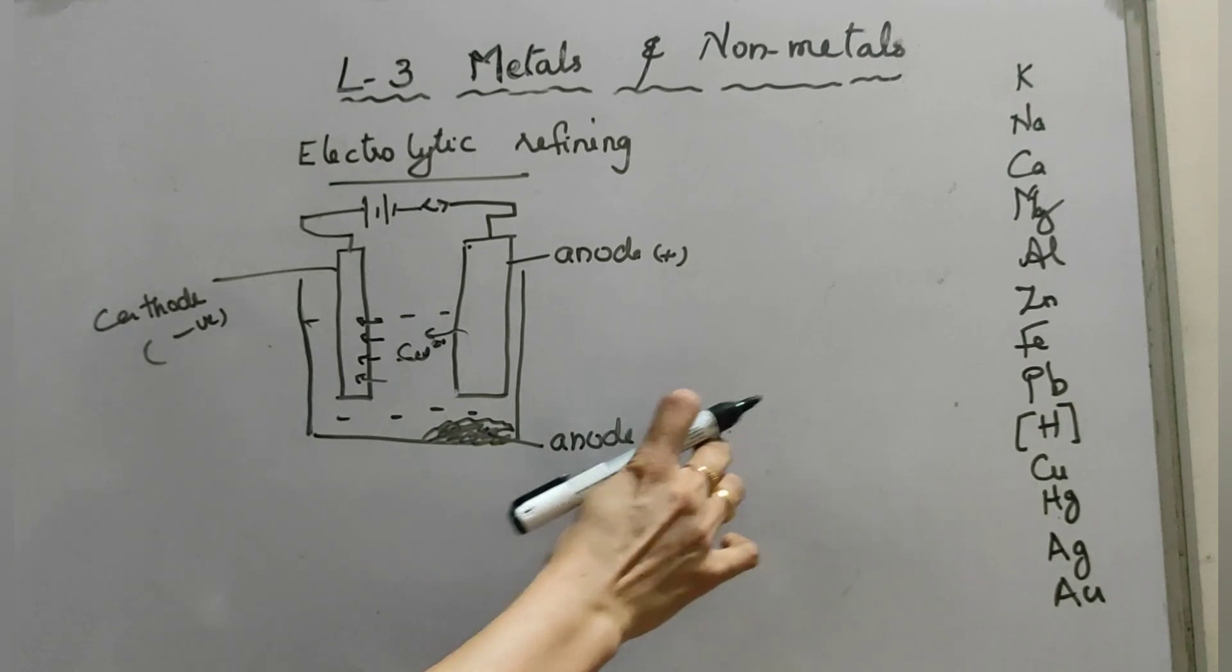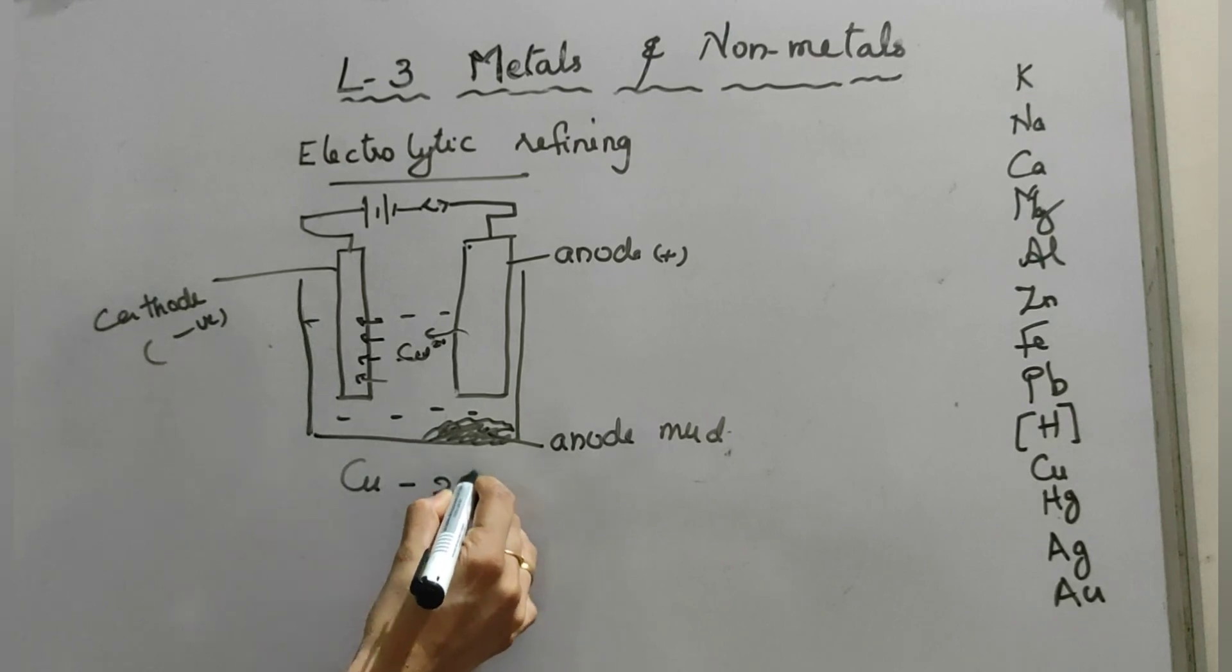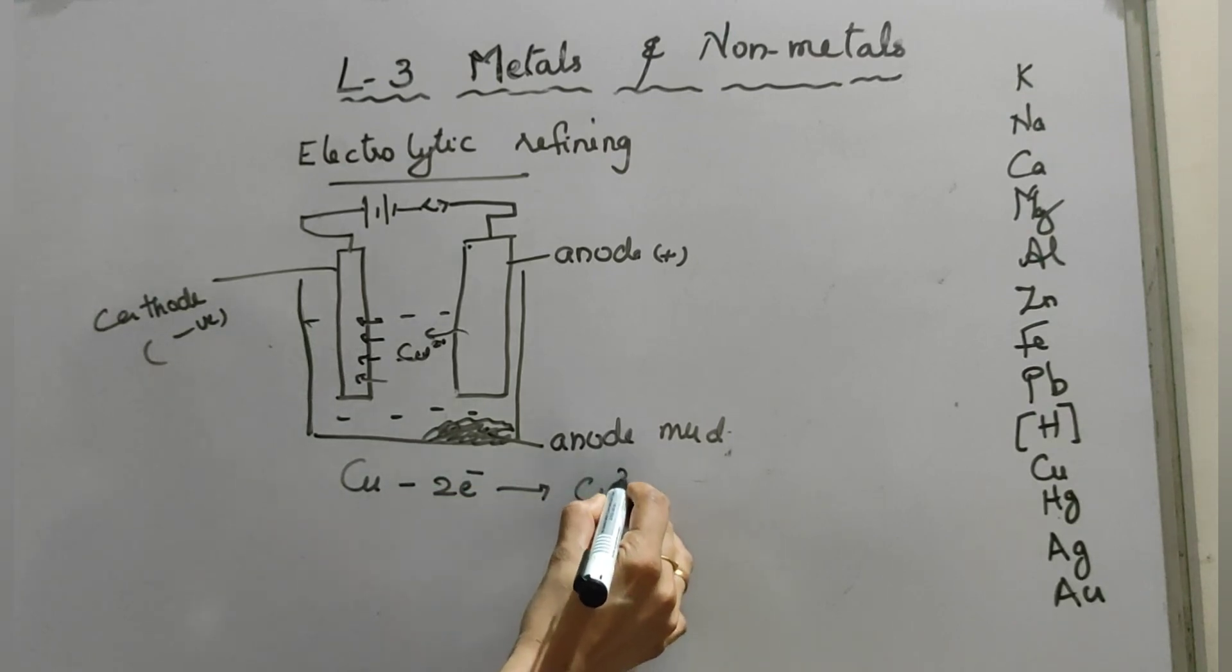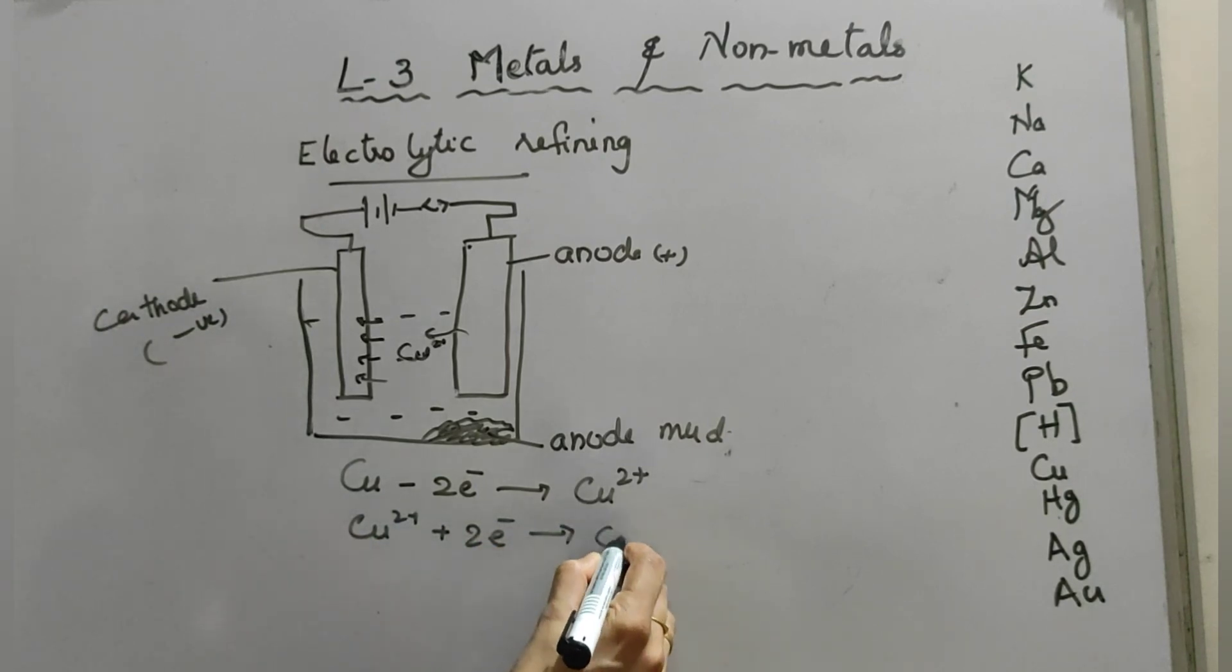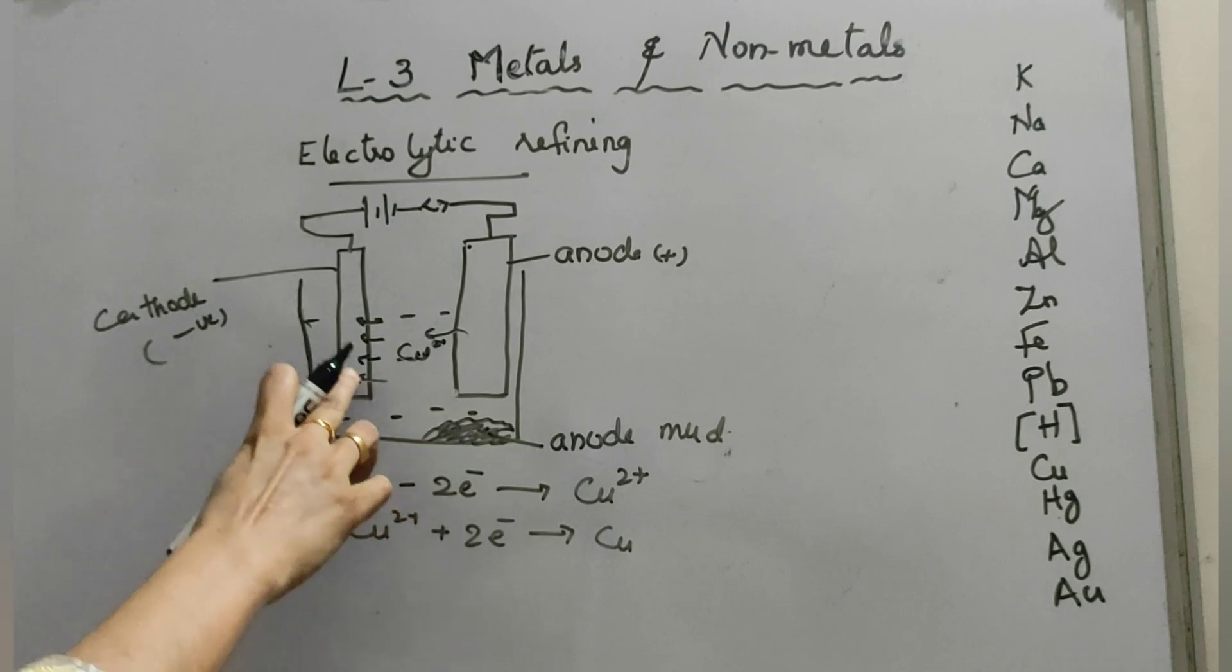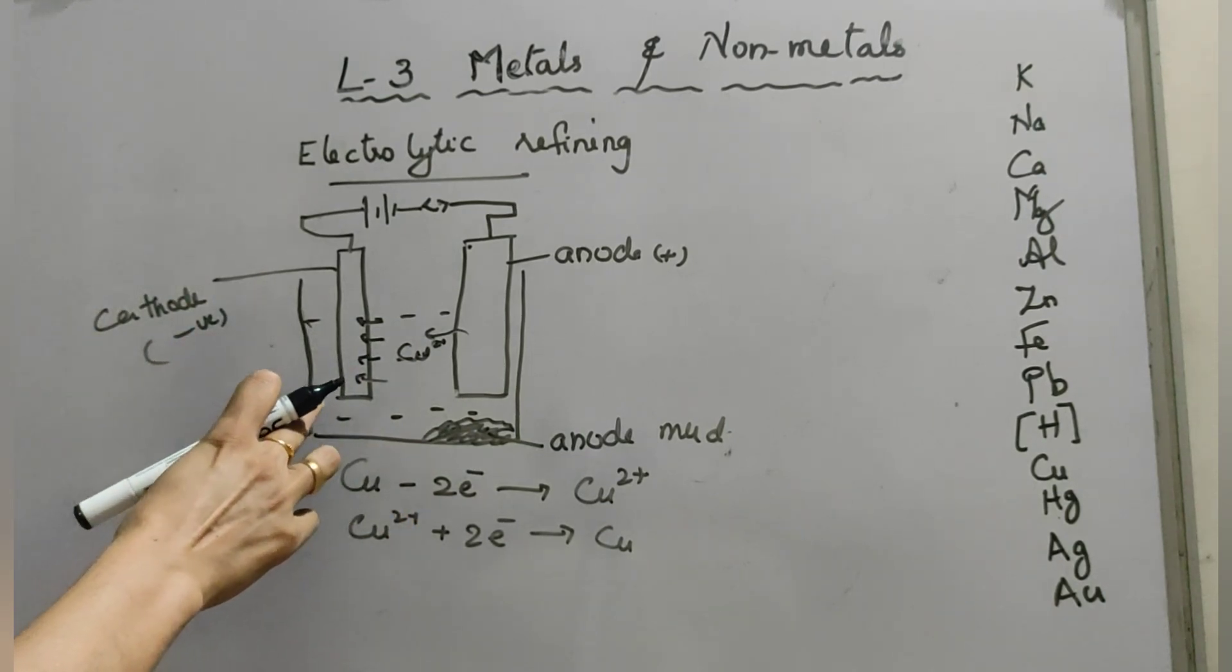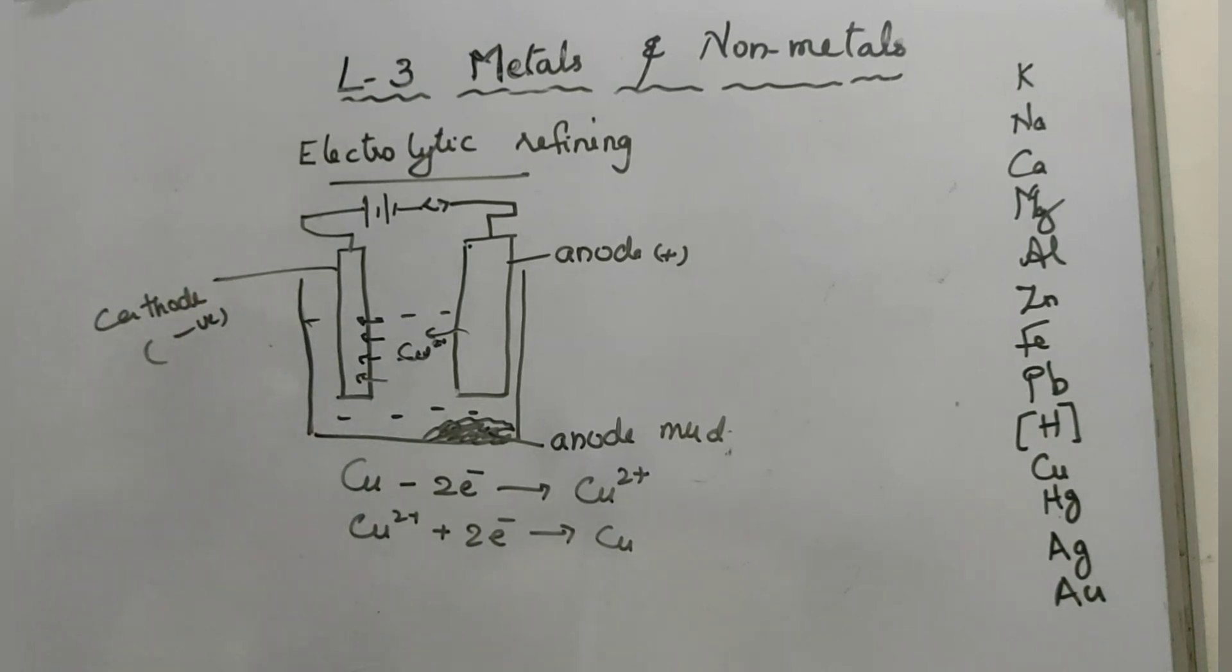This anode mud: like copper, this copper releases two electrons and forms copper 2+ ion. This copper 2+ ion plus two electrons are accepted and forms copper metal. So, taking out this cathode we get a pure copper strip. This method is electrolytic refining.